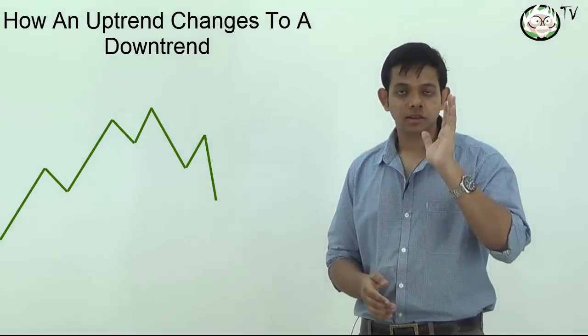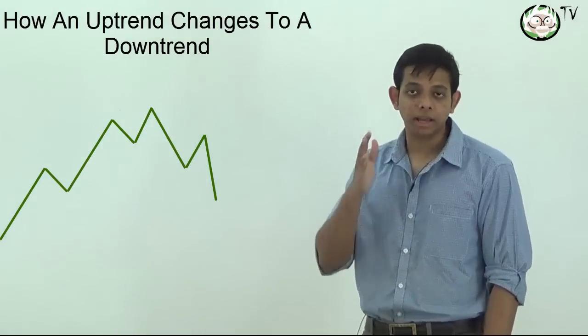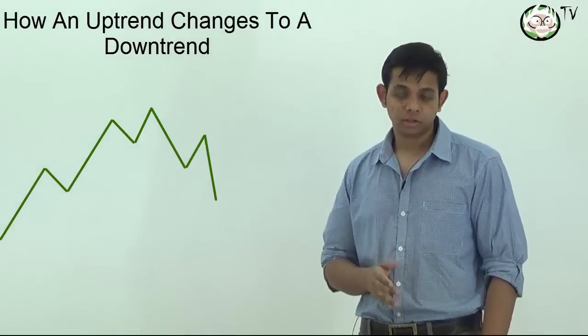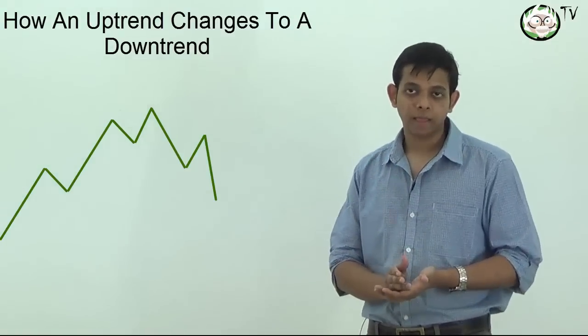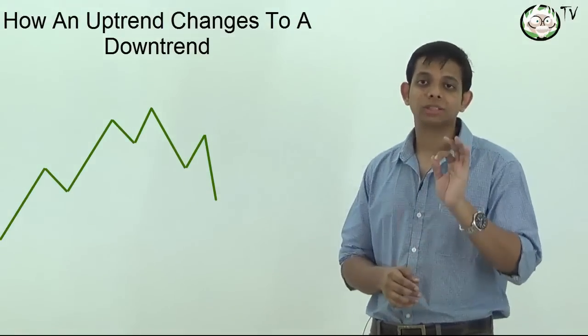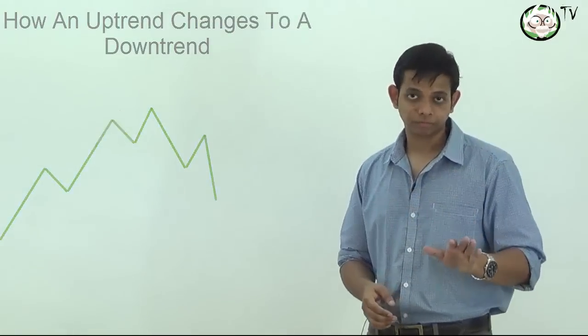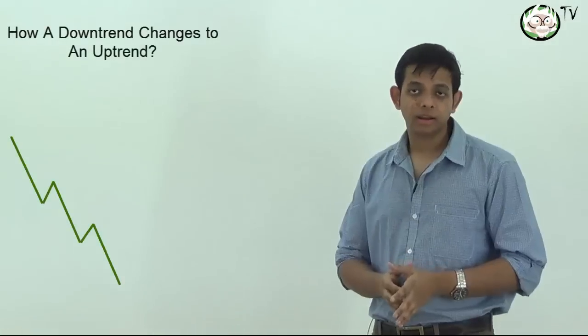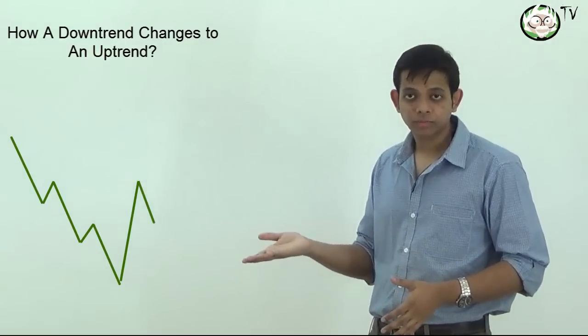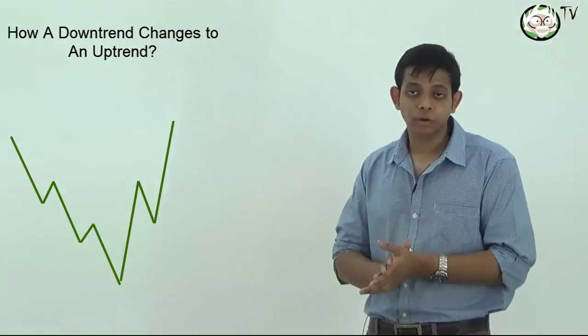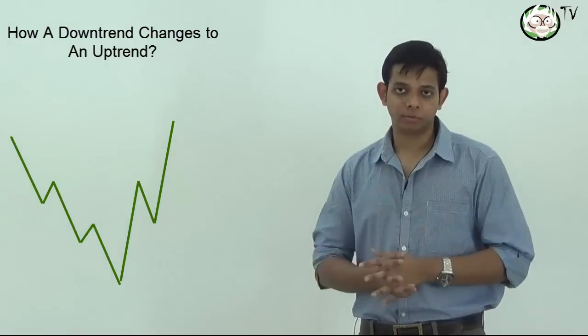This means that almost certainly this uptrend is now over and will either go into sideways or a full blown downtrend. So in an uptrend, when the previous swing low breaks and we get a lower swing high and the market continues down, we can safely assume the uptrend is over and a new downtrend has begun.